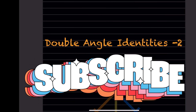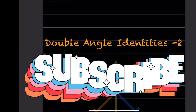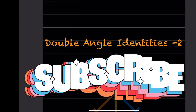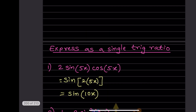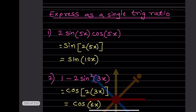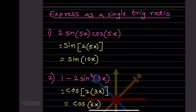Hi learners, welcome to my YouTube channel. Today we are going to see Part 2 of the double angle identities. First, here we have to express x as a single trigonometric ratio.